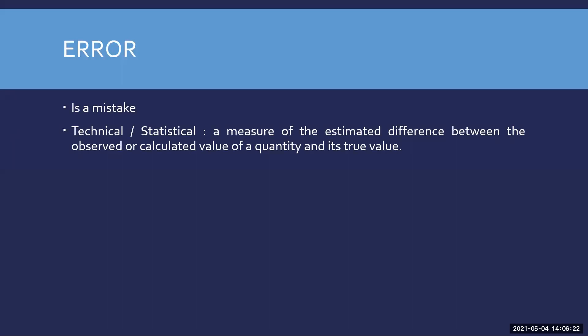Let us understand what error is first. In simple words, it is a mistake. But technically, the statistical definition is slightly different: it is a measure of estimated difference between the observed or calculated value of a quantity and its true value. It is an estimated difference — not calculated — between what is observed when we do an analysis and get a result, and the exact true value. That difference is called error.